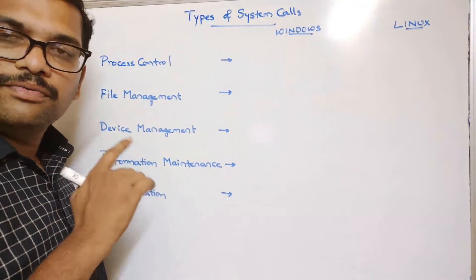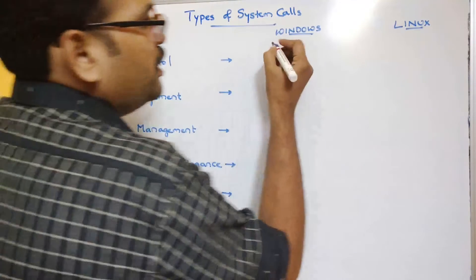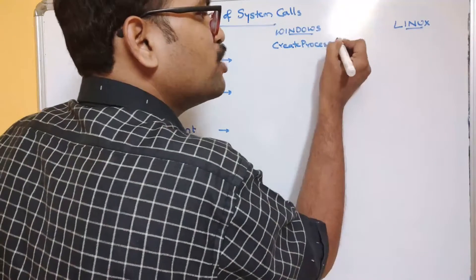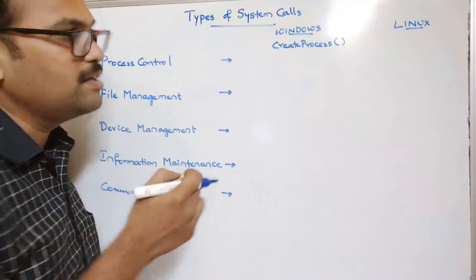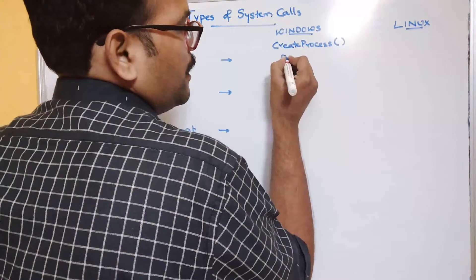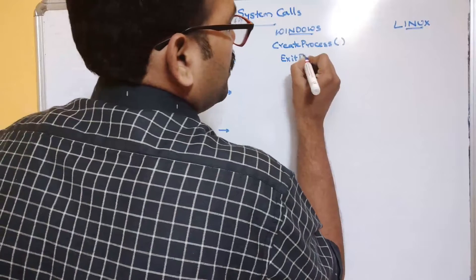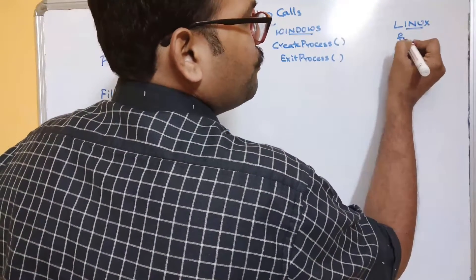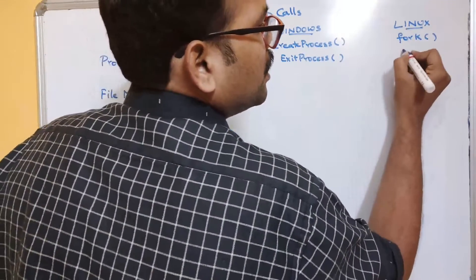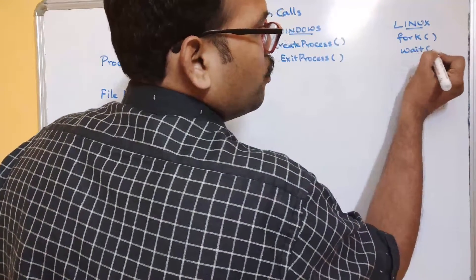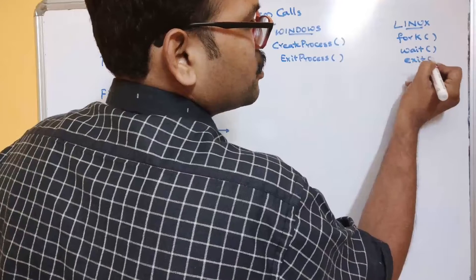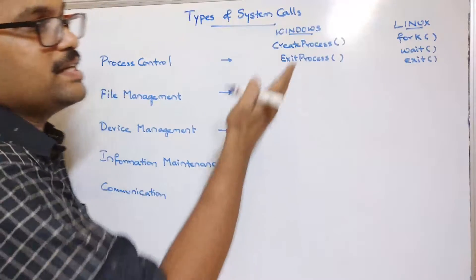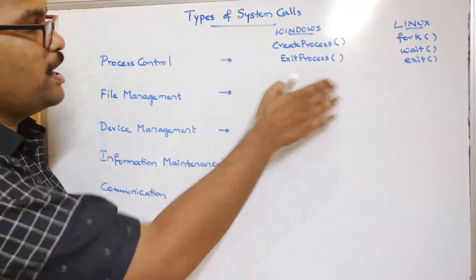Coming to process control — which is responsible for process management — in Windows the system calls are create process and exit process, similar to methods or functions. In Linux, we use fork for creation, and wait and exit. These are the system calls used in Linux, and create process and exit process are used in Windows for process control.